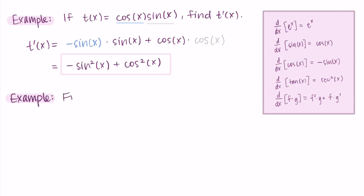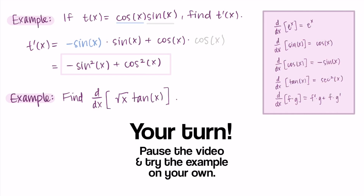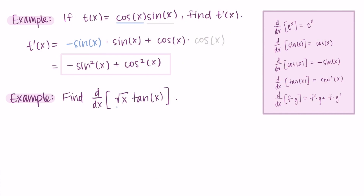Let's do one more example. Find the derivative with respect to x of the square root of x times tangent of x. You can imagine we're using the product rule since this is a product rule video, so go ahead and try that out. I'm going to use square root of x as my first function f and tangent as my second function g. In order to take the derivative of the square root of x, I need to rewrite it as x to the one-half.